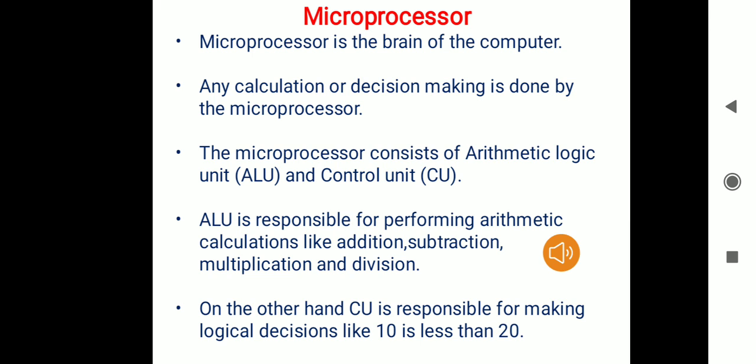That means all sorts of arithmetic operations such as addition, subtraction, multiplication, or division is done by the arithmetic logic unit, in short ALU, located inside the microprocessor. On the other hand, logical decisions like 10 is less than 20, such type of decisions are performed by the control unit, in short CU, which is also located inside the microprocessor.